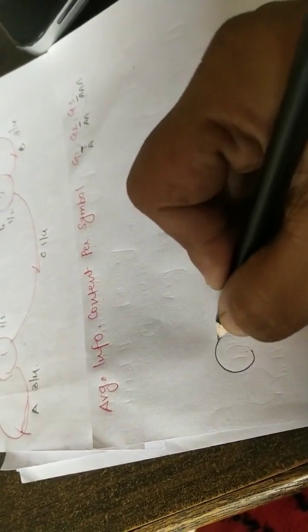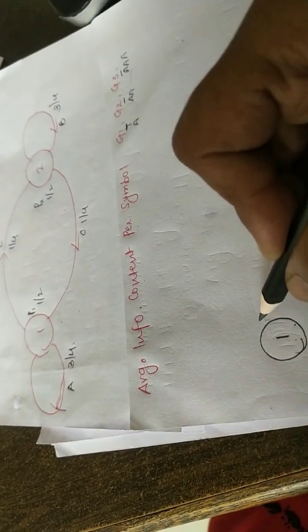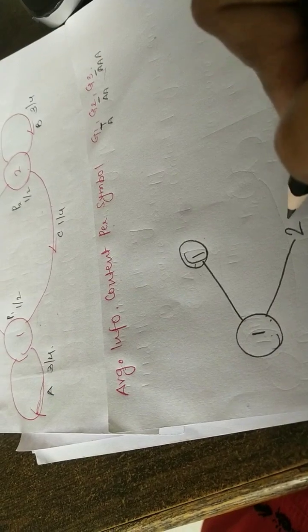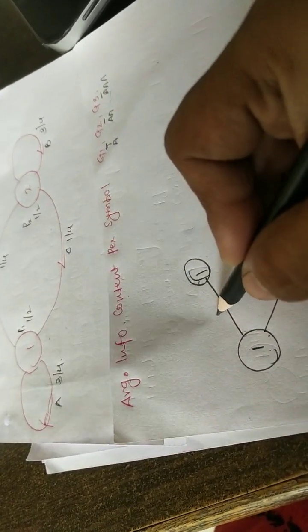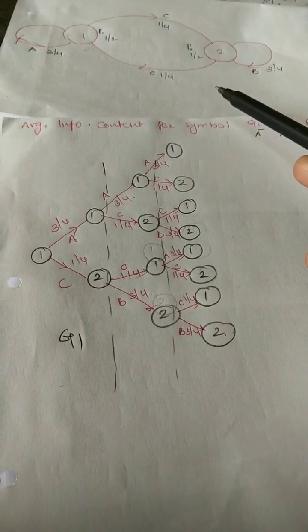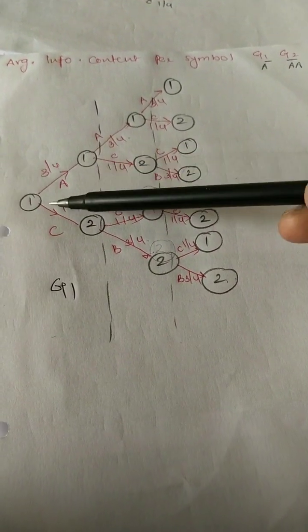Starting with the initial state one: from state one, the transition to one gives symbol 'a' with probability three by four, and transition from one to two gives symbol 'c' with probability one by four. For G1 the length is only one, so we draw only one to one and one to two. The probability of source one is also required, which is one by two. For G2 we go to the next stage, finding transitions one to one, one to two, two to one, and two to two.